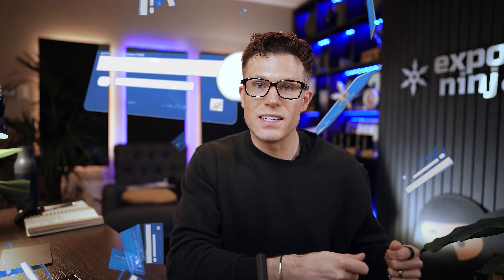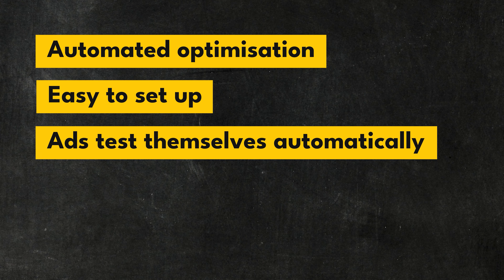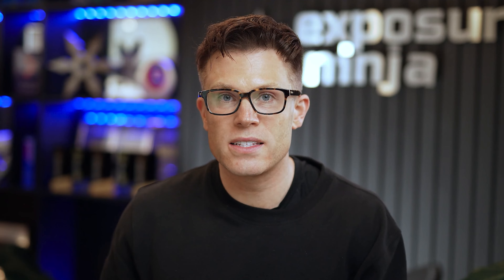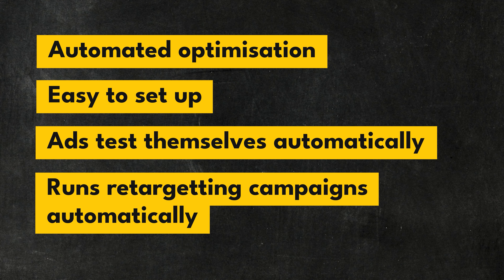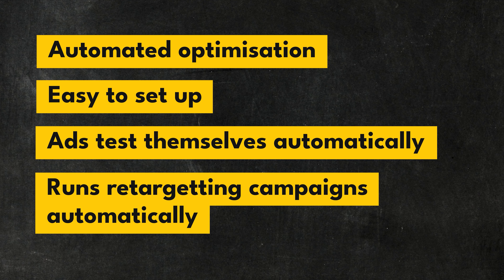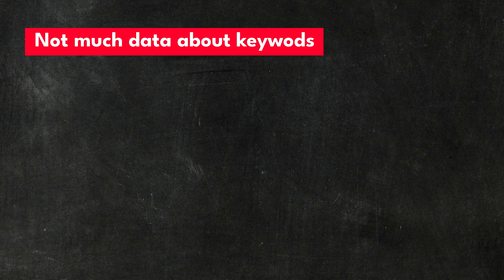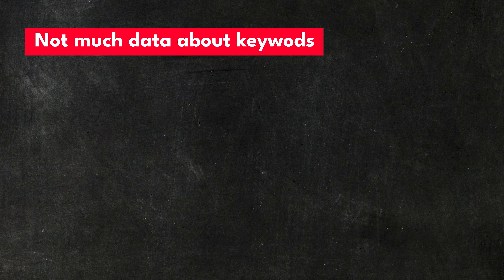Now before I go through our tips on how to improve the performance of your Pmax campaigns, let's talk about some of the more general pros and cons. Firstly, the automation — this can work really well. Campaigns can adapt quickly to changing user behaviour, meaning you don't necessarily need to be driving them all day every day. It also offers automated optimization across each of the different ad placements, meaning less time spent refining individual ads. For Exposure Ninja, that means we can manage a greater range of campaigns, which means we can be better value for our clients.